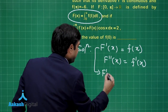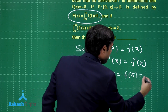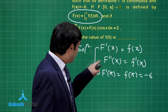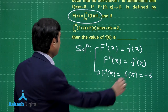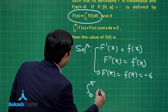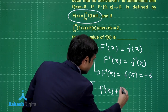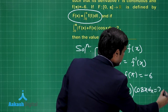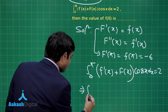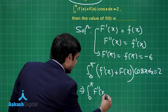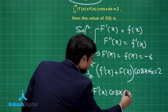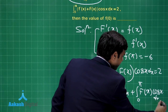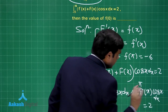So f'(π) = f(π) = −6. We use π because it is given, and our integral has limits 0 to π. When we go for F''(π) it equals f'(π). The given integral is ∫₀^π [f'(x) + F(x)·cos x] dx = 2, which means ∫₀^π F''(x)·cos x dx = 2.